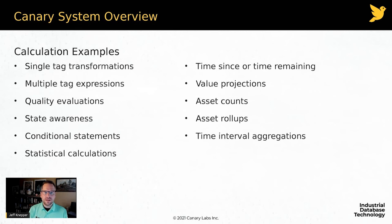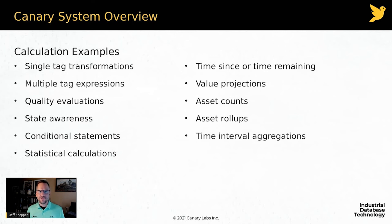Value projections: for example, we've made 147,000 widgets in the last six and a half hours — based on the last 30 minutes of operation, at the end of our eight-hour shift we should be at X number of widgets. We also have asset calculations: with the asset model we understand asset type and pump count, and from there we can calculate the average value of a tag across all pumps, total values, min, and max based on asset rollups.